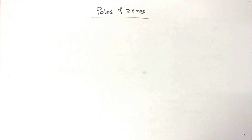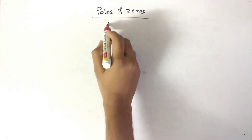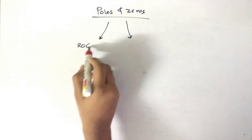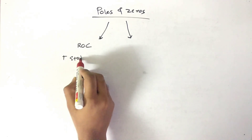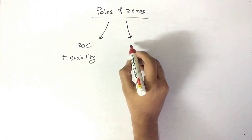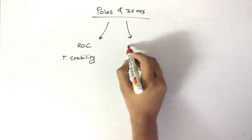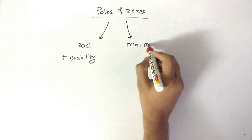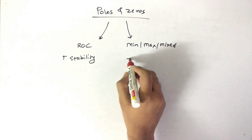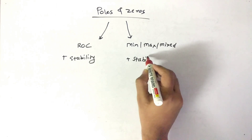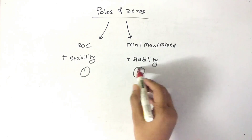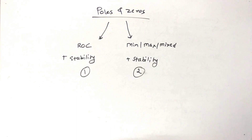Talking about the variety of questions, Poles and Zeros problems are basically divided into two varieties. The first is ROC sums, where we have to comment on stability. The second variety involves finding minimum, maximum, and mixed phase systems, and then commenting on stability as well.